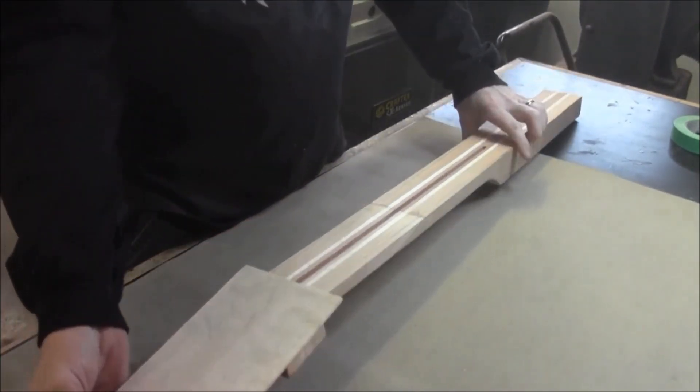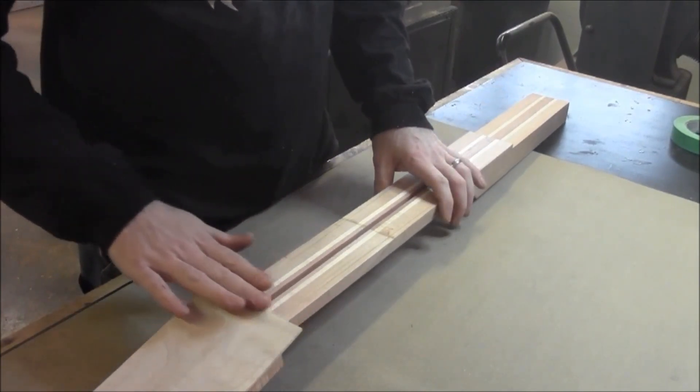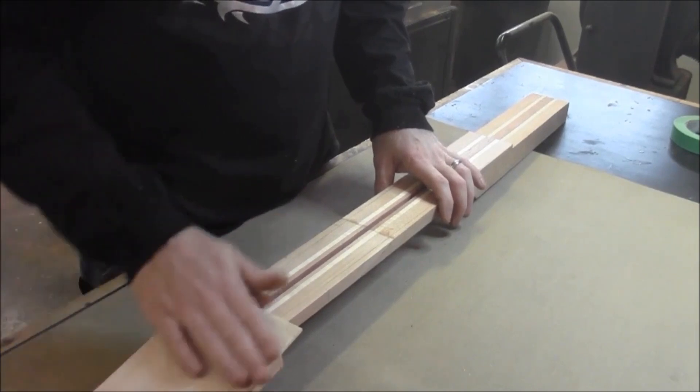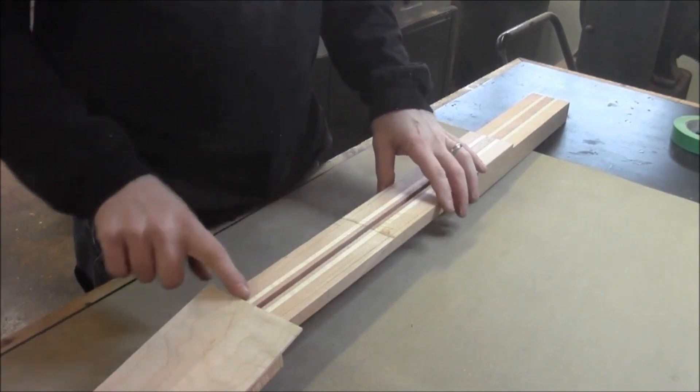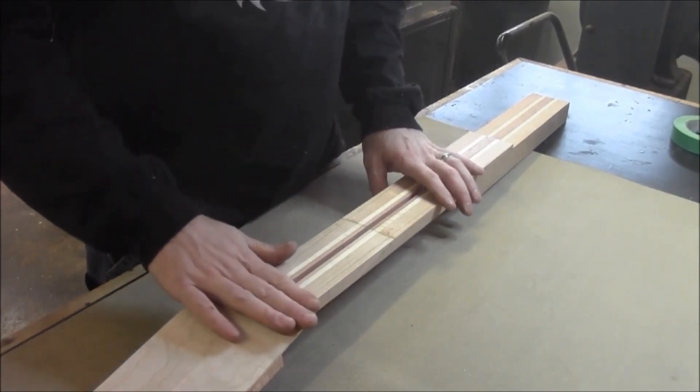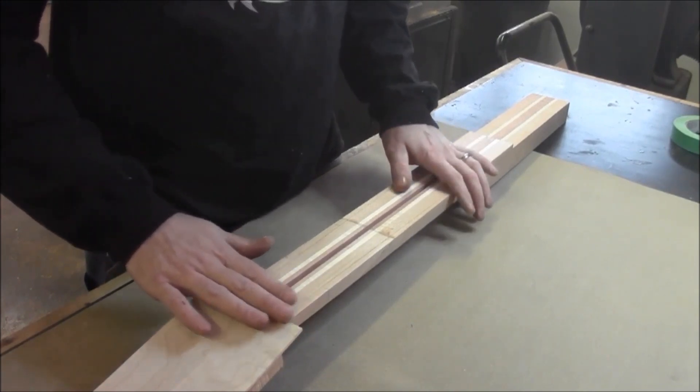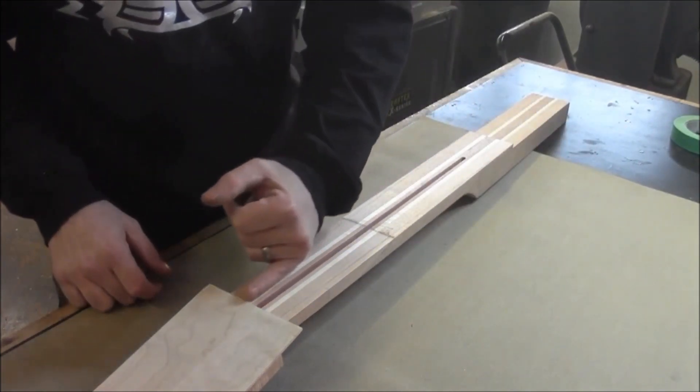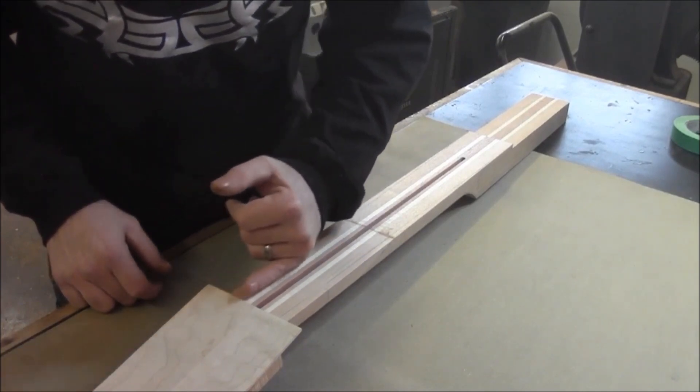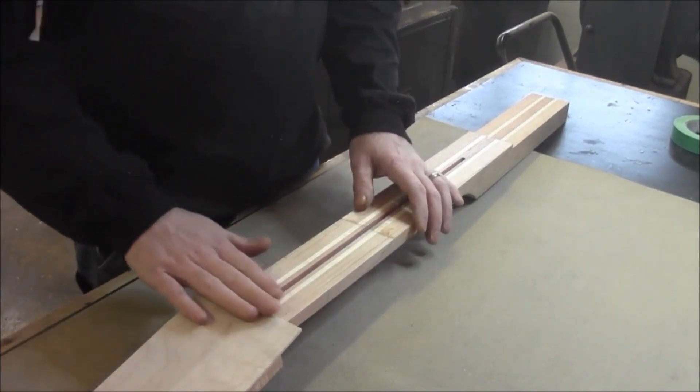Now there are a couple things we have to do. First, we've got this edge of the cap on the headstock. We need to level it to the same plane as the neck using a sanding stick and possibly a file. We'll get it down nice and flat, then check it with a straight edge along the neck and past the slope to make sure it's good, because this is where the lock nut will sit.